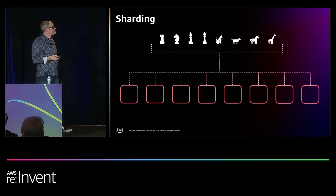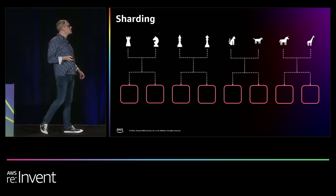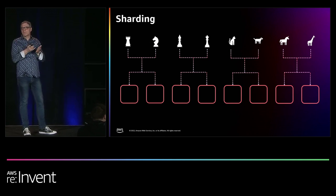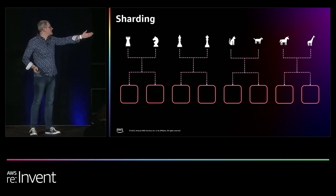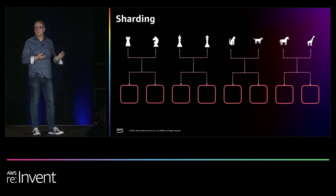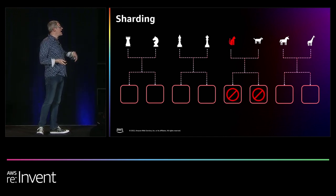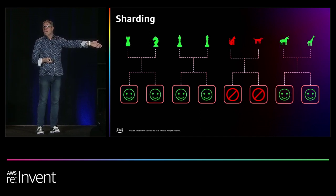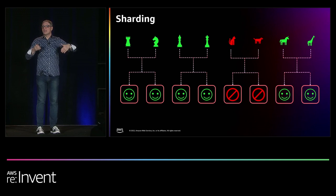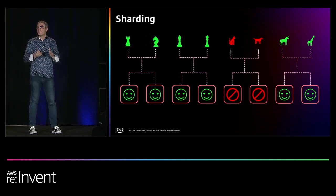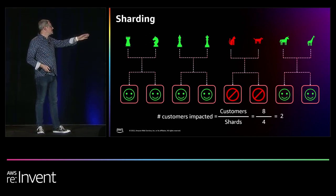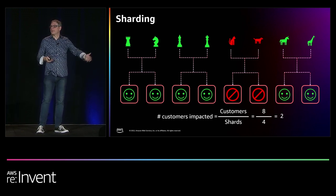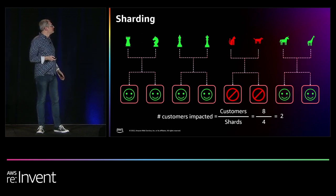With sharding: divide the workers into chunks — in this case, shards of two workers each. The cat does its thing, kills its two workers. It and the dog are unhappy, but everybody else is happy. That's the bulkhead architecture at work — the failure is contained to that shard. Number of customers impacted equals customers divided by shards: eight customers divided by four shards equals two customers impacted. Now, shuffle sharding: each client is assigned its own unique pair of two workers, but they can share workers with other clients. For example, the bishop has two workers; the rook has a different two workers but shares one with the bishop.